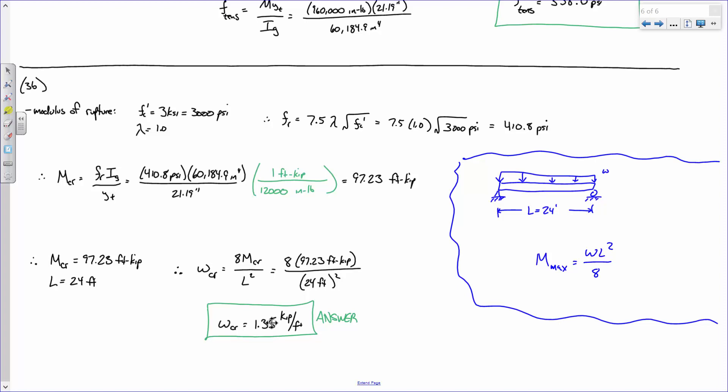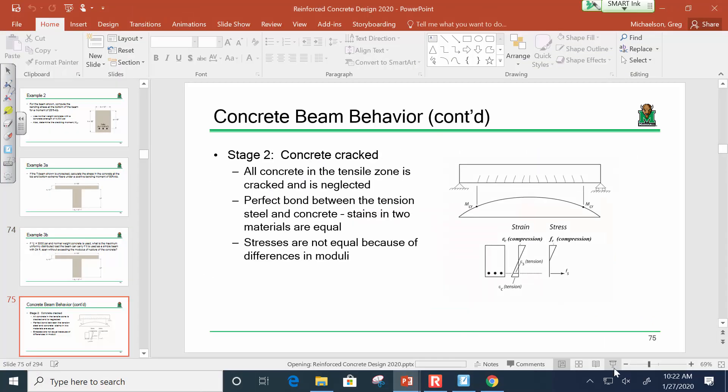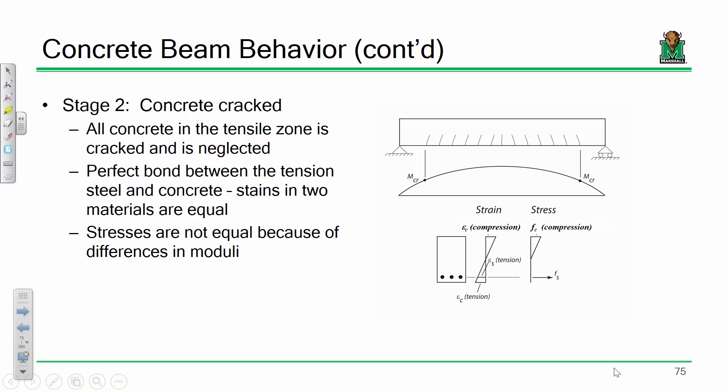Now, 0.70 kips per foot is the load that causes cracking — but that is not the maximum load a concrete beam can experience. Concrete beams can withstand loads far above and beyond their cracking moment. When you exceed the cracking moment, you enter Stage 2 behavior. The reason concrete beams can withstand loads far beyond cracking is because of the steel reinforcement — that's the whole point. Once the concrete in tension cracks, the steel takes over.